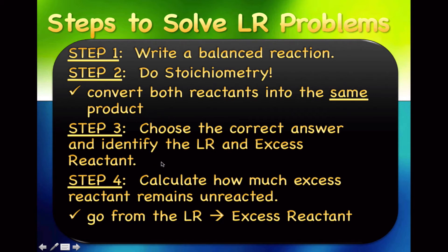Step three: look at your answers, choose the correct one, and identify the limiting reactant and the excess reactant. Step four: calculate how much excess reactant remains unreacted. This step is sometimes optional, but if asked, you start with the limiting reactant and go to the excess reactant to find how much was used and how much is left over.